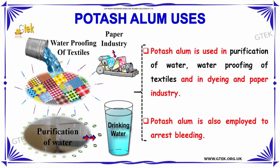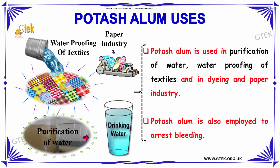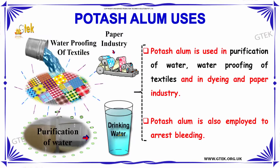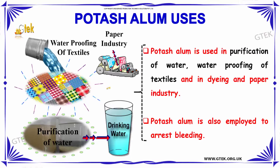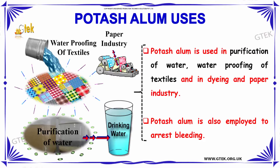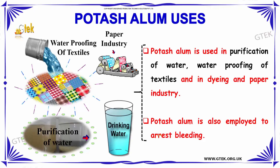What are its uses? Potash Alum is used in purification of water, waterproofing of textiles, and in dyeing and paper industries. Potash Alum is also employed to arrest bleeding.